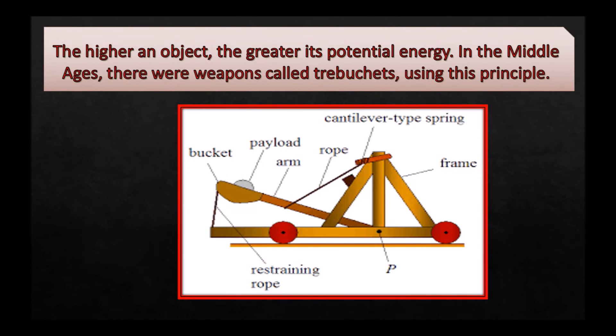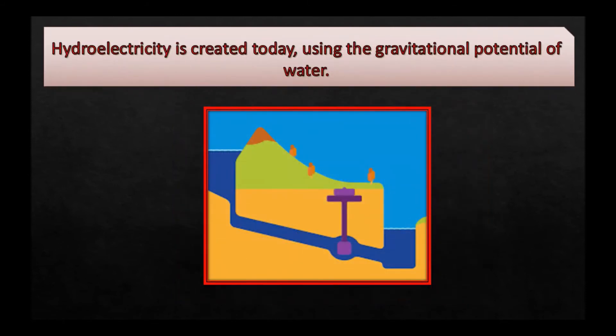The higher an object, the greater its potential energy. In the Middle Ages, there were weapons called trebuchets using this principle. Hydroelectricity is created today using the gravitational potential of water.